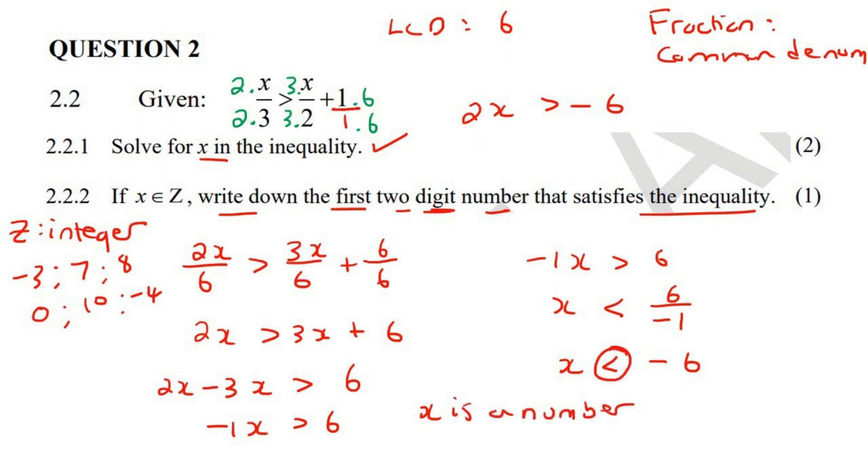smaller than negative 6. Now, what is smaller than negative 6? You've got to be super careful about this. Is negative 5 smaller than negative 6? No. Negative 5 is actually bigger than negative 6. But Kevin, 5 is smaller than 6. Yes, but we're going negative. Would you rather want your bank balance to say negative 6 or negative 5? I would rather want my bank balance to say negative 5, because it means I'm less in debt. If my bank balance says negative 100, it means that I'm 100 rand in debt, which means I really don't have a lot of money.